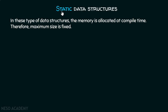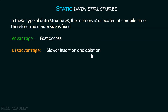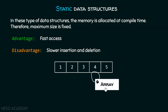We can make a further distinction: static data structures and dynamic data structures. In static data structures, the memory is allocated at compile time, so the maximum size is fixed. The advantage is that we can access data very fast, but the disadvantage is slower insertion and deletion operations. Array is an example of a static data structure — we fix the size beforehand at compilation time, and maximum size is always fixed. We will discuss why these trade-offs exist in later lectures.